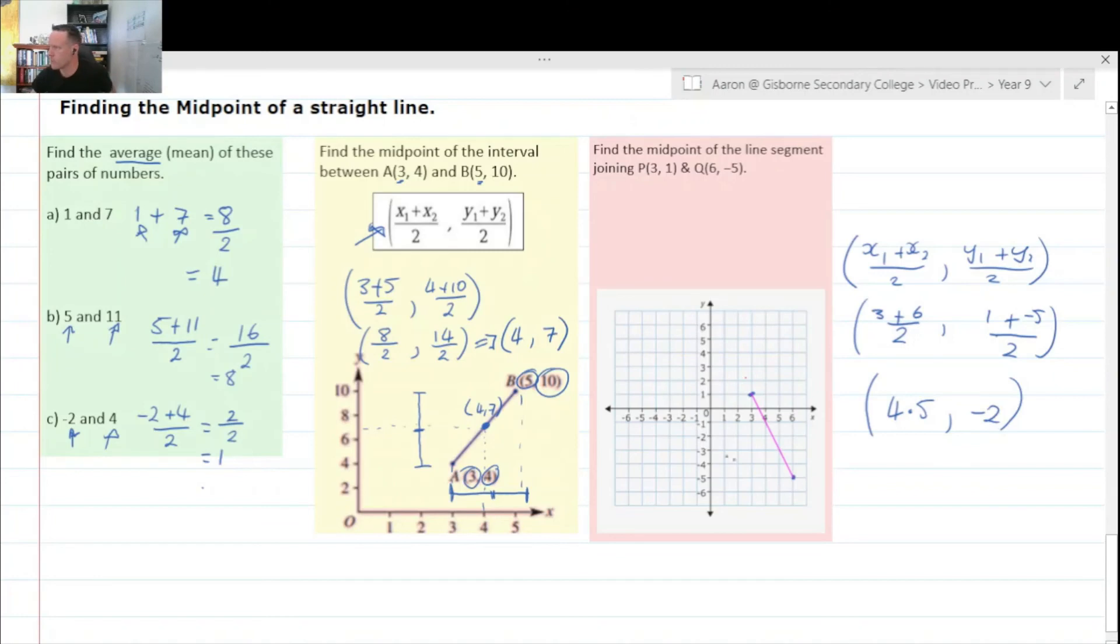And now points. So if we go 4.5, which is there, and negative 2, so that is the midpoint right there at 4.5 and negative 2.